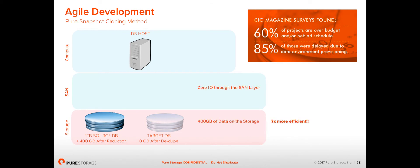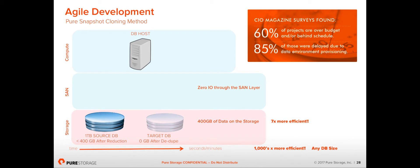We've moved no IO through the SAN layer, so there's no impact on our database host. Even with one copy, this is seven times more efficient than RMAN, and it gets more efficient with multiple copies. The end-to-end clone takes just a few minutes, and crucially, this time is not dictated by the size of the database — a ten terabyte database can be cloned just as quickly as a one terabyte database.